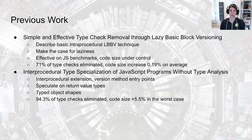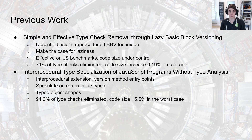In terms of previous work, the first paper we published describes the basic intraprocedural technique and makes the case for using laziness. We've shown it's effective on JavaScript benchmarks and that code size remains under control — we're able to eliminate 71% of dynamic type checks at the expense of a code size increase of only 0.19% on average. In our second published paper, we made several interprocedural extensions including versioning of method entry points, speculation on method return types, and the use of type object shapes integrated with basic block versioning. Using these extensions, we were able to eliminate 94.3% of type checks on average, with a code size increase of only 5.5% in the worst case across all benchmarks.